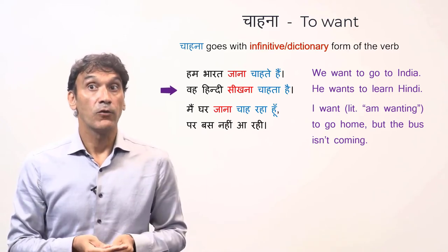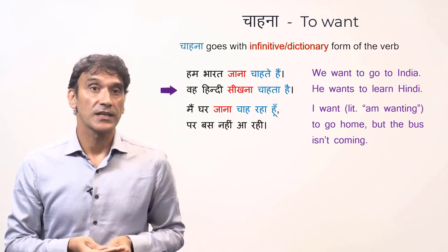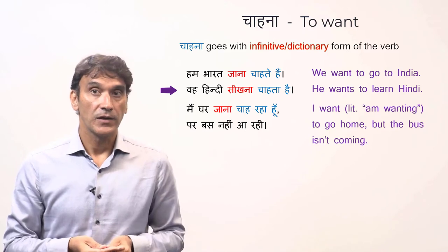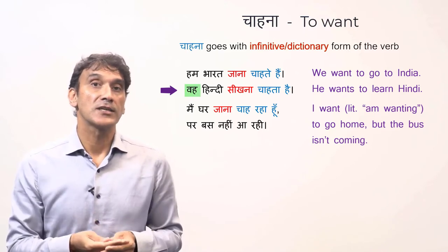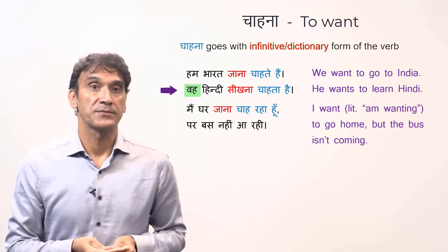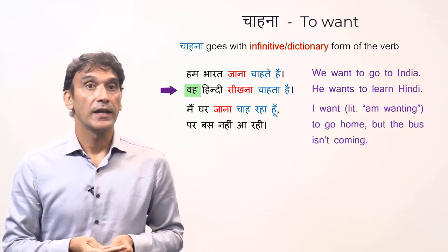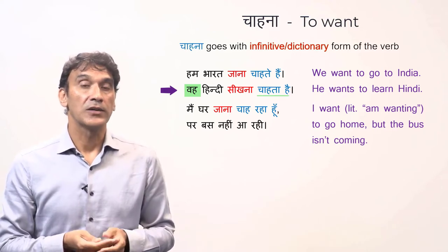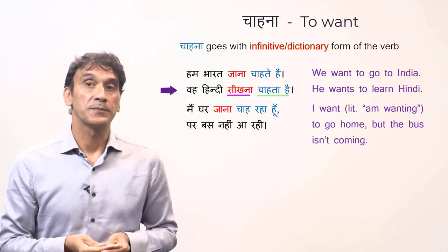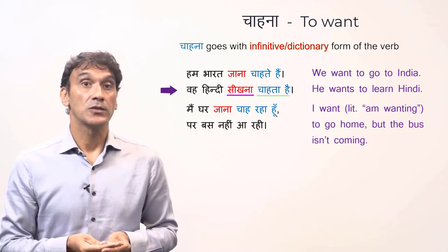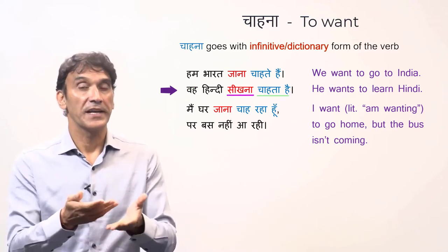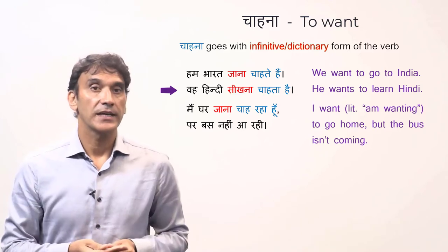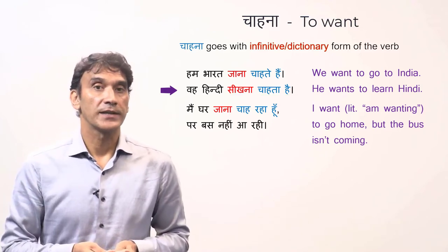Next example: 'wo hindi seekhna chahata hai' — he wants to learn Hindi. Wo is a third person singular masculine subject pronoun, and that's why chahata hai. It goes with another verb, seekhna, to learn, which is in infinitive form. Wo hindi seekhna chahata hai — he wants to learn Hindi.